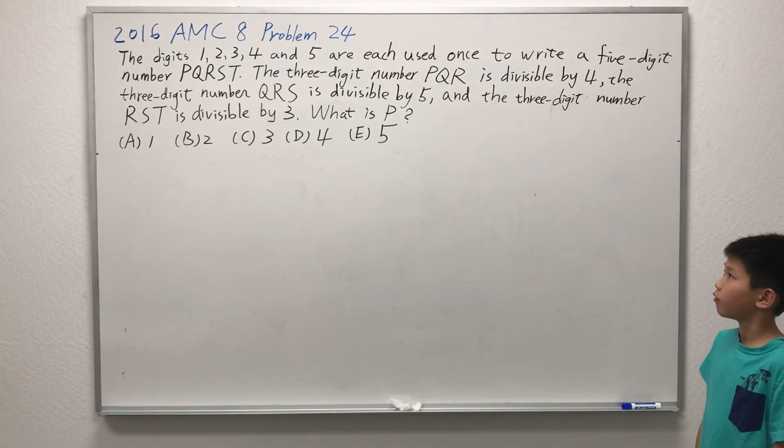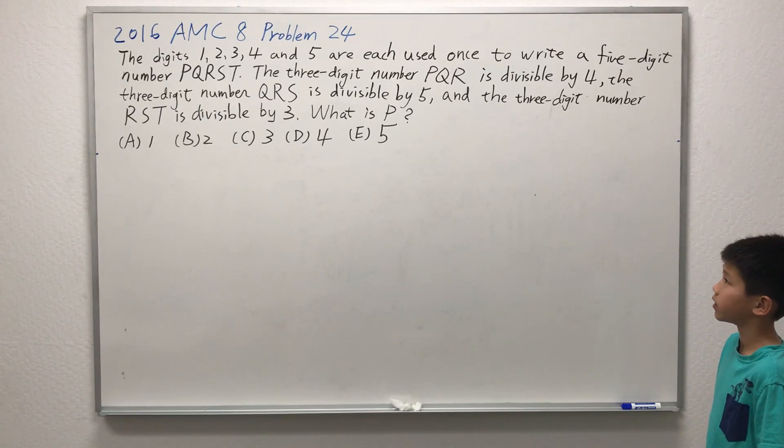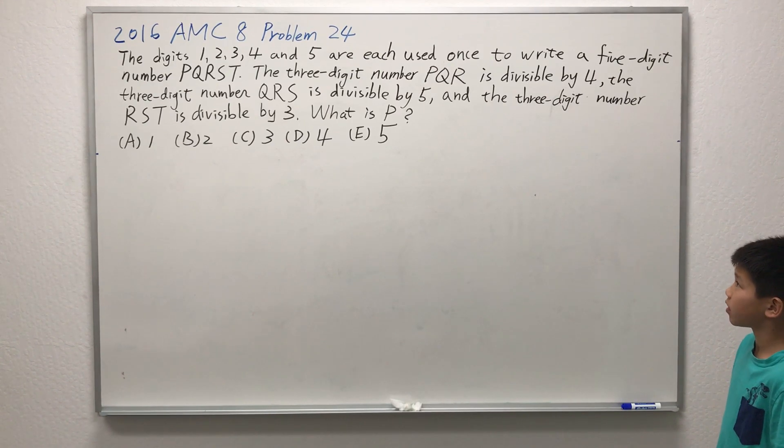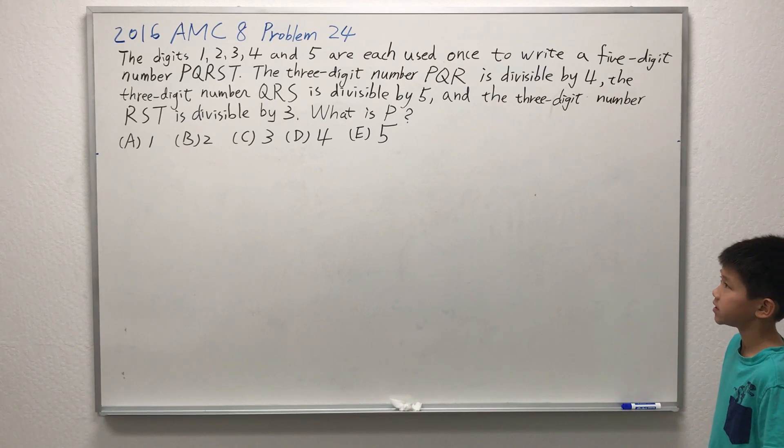The digits 1, 2, 3, 4, and 5 are each used once to write a 5-digit number PQRST. The 3-digit number PQR is divisible by 4, the 3-digit number QRS is divisible by 5, and the 3-digit number RST is divisible by 3. What is P?